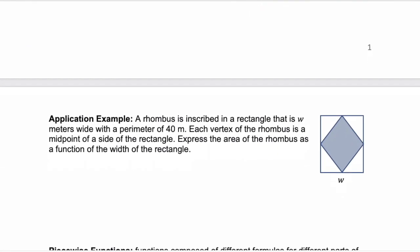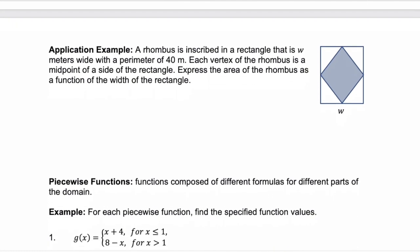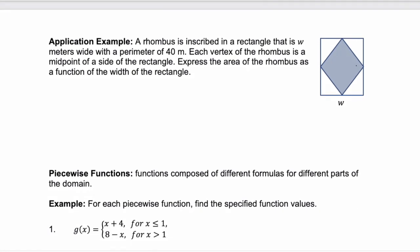How about an application problem? We're told that a rhombus is inscribed in a rectangle that is w meters wide, with a perimeter of 40 meters. Each vertex of the rhombus is a midpoint of a side of the rectangle. Express the area of the rhombus as a function of the width of the rectangle. Start with what we know.